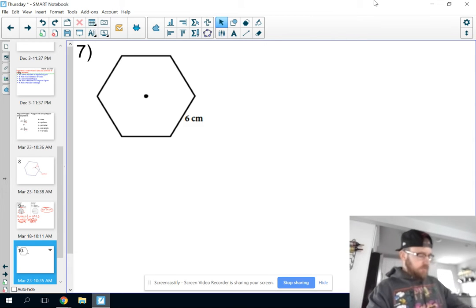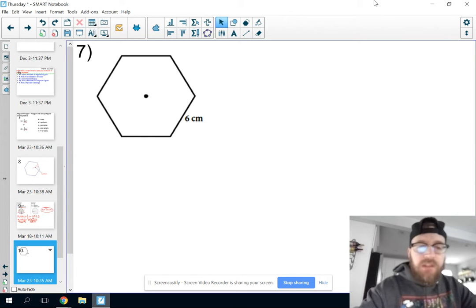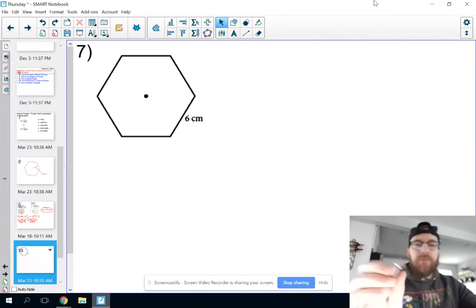Hardest problem on the worksheet is probably on the back side of this, number 7. So looking at that problem, we want to find the area and perimeter.